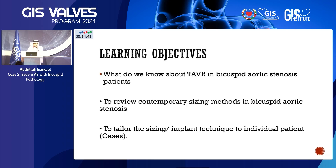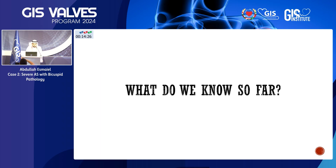My learning objectives are a quick overview of what we know about TAVR and bicuspid aortic stenosis so far, to review the contemporary sizing methods, and then to apply the sizing methods on three cases. We'll go quickly over the cases for the sake of time.